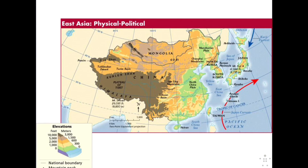Peninsulas, islands, and seas. The first one I want to look at is the South China Sea. The South China Sea is located south from Taiwan to the Philippines and the peninsula of Southeastern Asia — you can see it circled in red on your map. The South China Sea carries one-third of the world's shipping traffic. A lot of importation and exportation, especially exportation, is going on in the South China Sea.